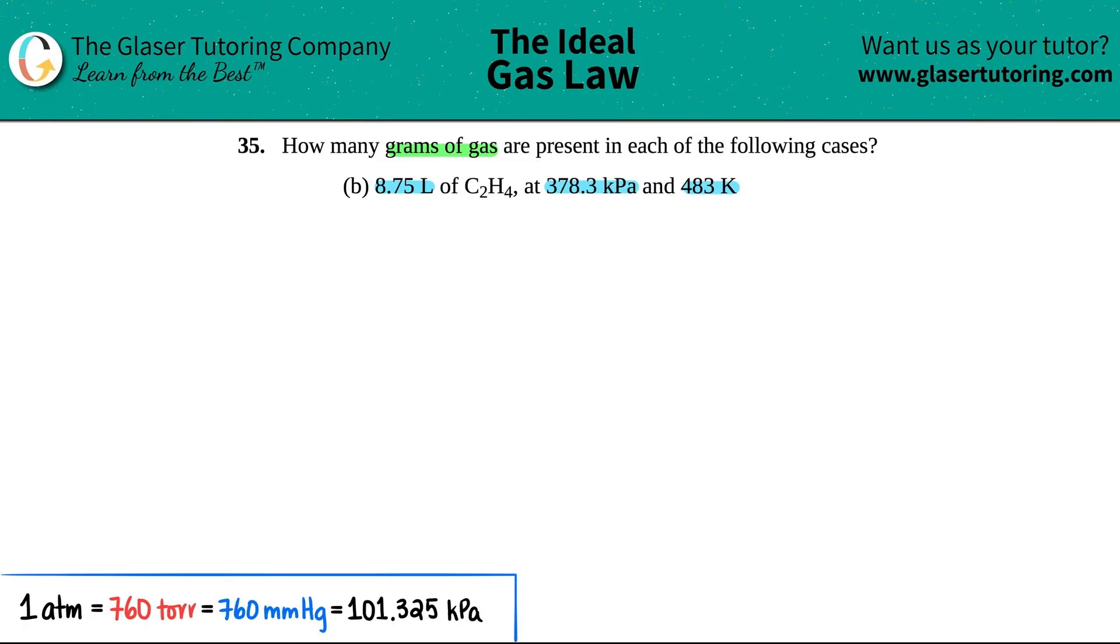With gas equations, the best thing to do is list out all the variables that you got and see what you want to solve for. They gave us a volume, V, that's 8.75 liters. They gave me a pressure value, remember kilopascals is a pressure, so I have 378.3 kilopascals. And then I have 483 kelvin, that's a temperature, so I got T equals 483 kelvin. They're asking for the grams of the gas, so grams are basically a mass. We want to find out the mass of this compound, specifically the ethene which is C2H4.